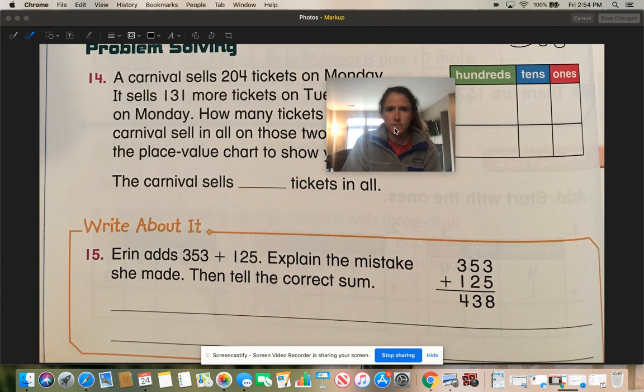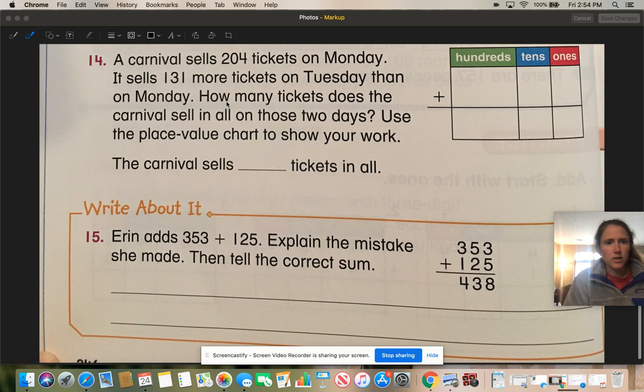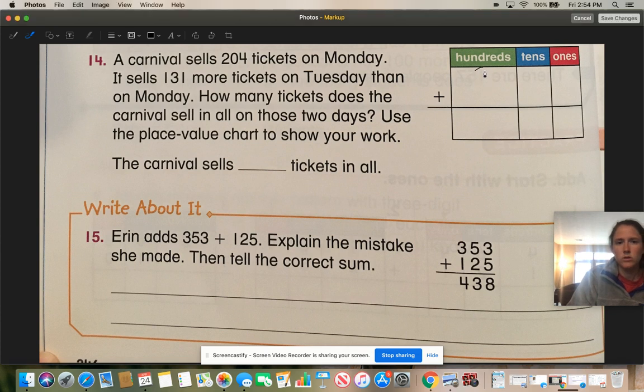Problem solving. A carnival sells 204 tickets on Monday. It sells 131 more tickets on Tuesday than on Monday. How many tickets does a carnival sell in all on those two days? Use the place value chart to show your work. Okay, so a carnival sells 204 on Monday. So now this is where they're trying to trick you. They want you to think that they sold 131 tickets on Tuesday. No, it says they sold 131 more tickets on Tuesday than on Monday. So Tuesday is these two numbers combined. So 4 plus 1 is 5. 0 plus 3 is 3. And 2 plus 1 is 3.